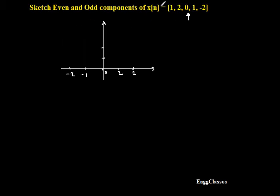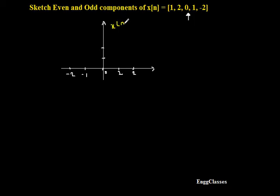In this example, x[n] is a discrete time signal given as {1, 2, 0, 1, -2}. An arrow mark indicates the amplitude at n equal to 0. Now let me sketch that signal x[n]. Later we can find its even part and odd parts very easily. I will plot this with respect to n, and at n equal to 0 its amplitude is 0.